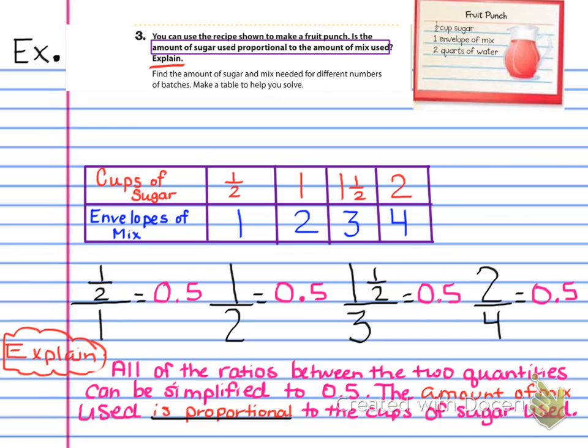So I'm not sure if I said this, but all of the ratios, when you divide one half divided by one, one divided by two, one and one half divided by three, and two divided by four, you get 0.5 for all of them. So all of the ratios between the two quantities can be simplified to 0.5. The amount of mix is proportional to the cups of sugar used.